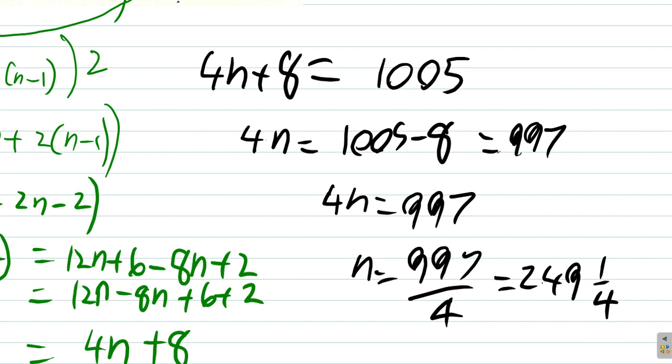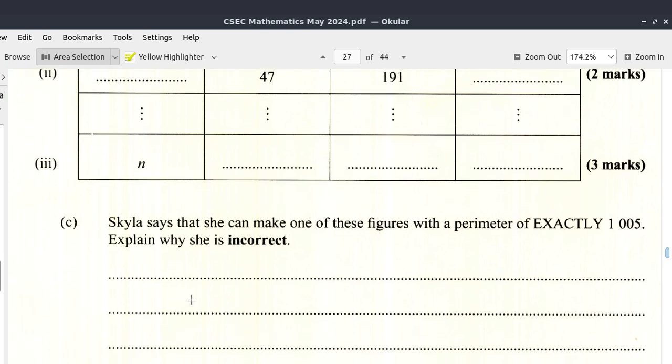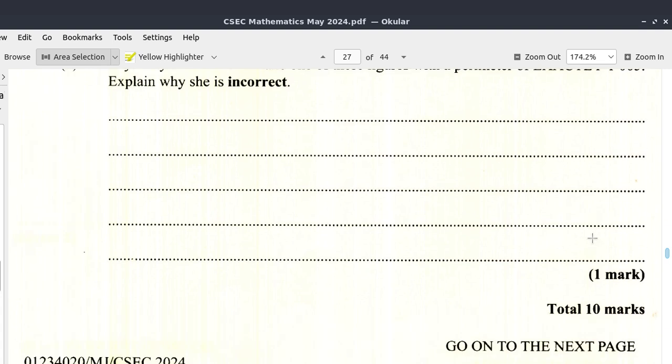So, you could make a note that since n does not happen to be an integer, instead it is 249 and a quarter, it would not work because 249 and a quarter is not an integer. And n is the diagram number. So, n is supposed to be an integer. All right. So, that's it for question 7. I'll see you in the next video.